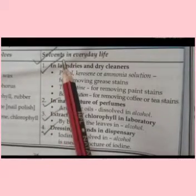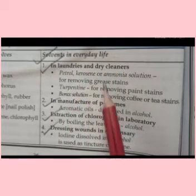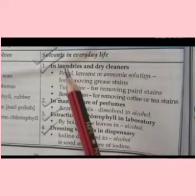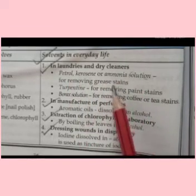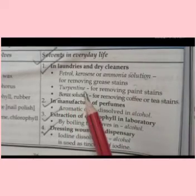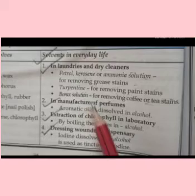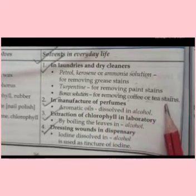There are so many solvents which we use in our daily life. For example, petrol, kerosene, and ammonia solutions — they are used in laundries and dry cleaners for removing grease stains. Even turpentine is used for removing paint stains, and borax solution is used for removing coffee or tea stains.